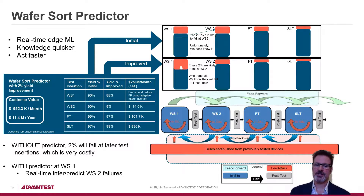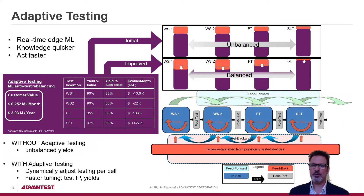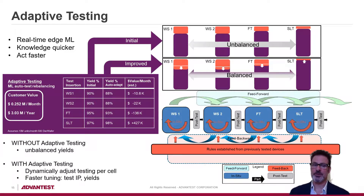The financial projections shown here and on subsequent slides are examples based on customer scenarios, included to give an idea of the value these approaches can provide. Next, what if you could use machine learning models to turn adaptive tests from a test time reduction tool to a true test flow optimization tool — smartly using your available test budget to do more testing on suspected problem devices and less testing on devices that models predict will have no issues? In this scenario, powerful edge compute resources enable on-the-fly decision making, balancing yield across insertions and ultimately improving end-to-end yield.